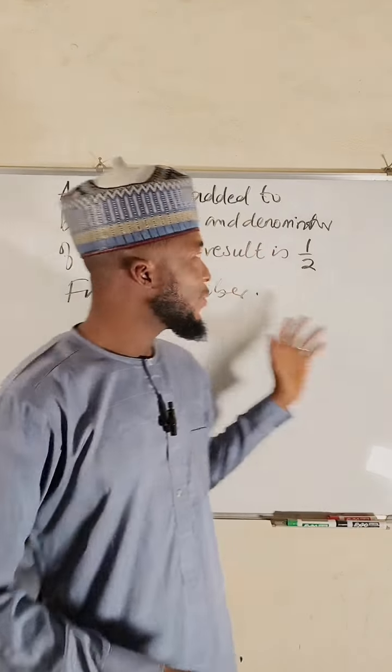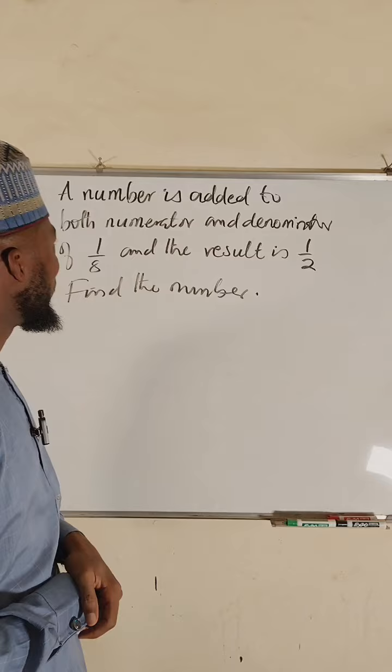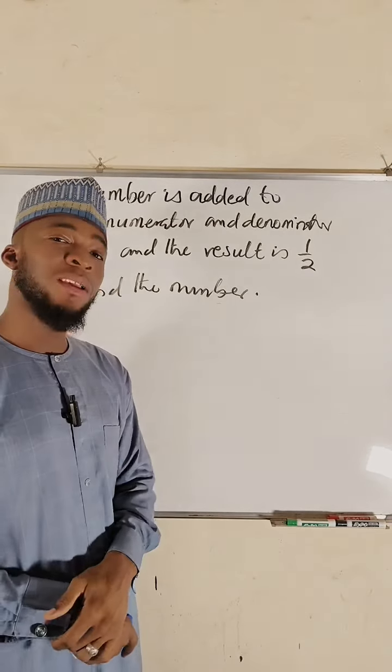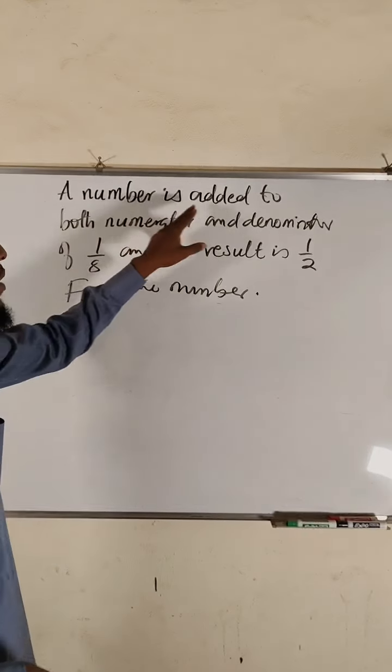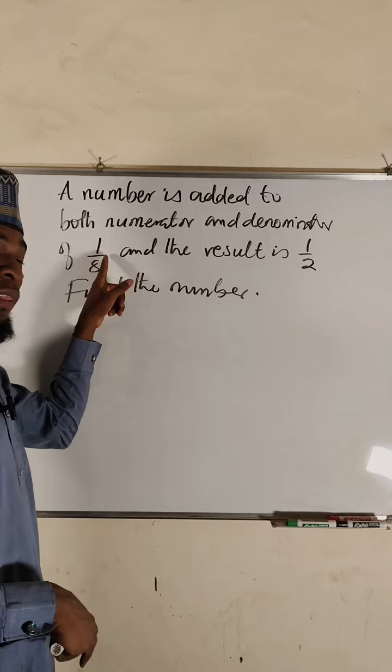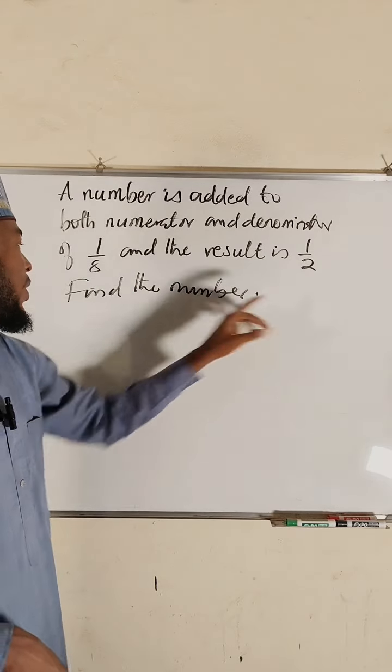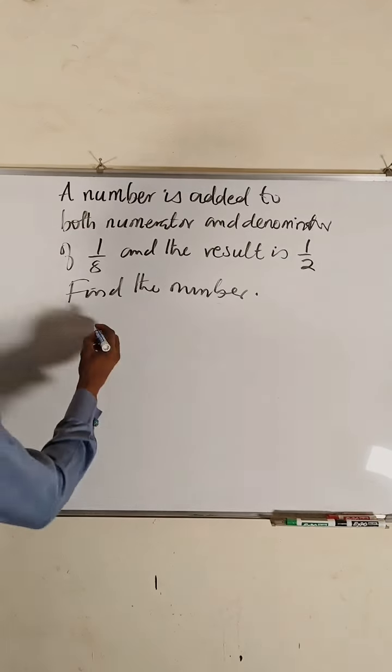Hello good dear viewers. This question is from Y2024 mathematics examination though I wonder why this question should appear in Y, it's too elementary. The question reads: a number is added to both numerator and denominator of the fraction one over eight and the result is one over two.